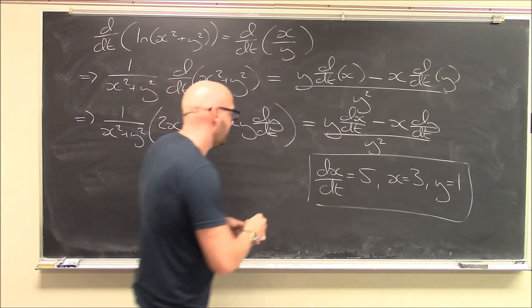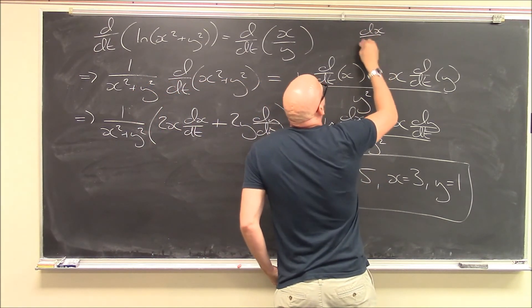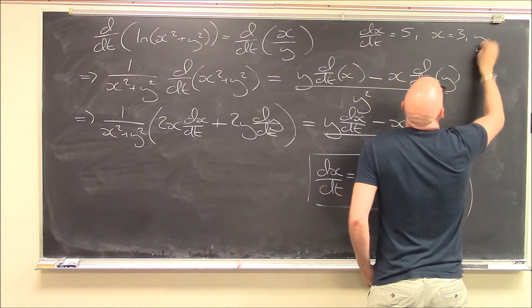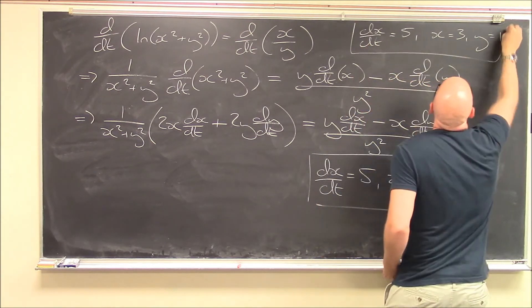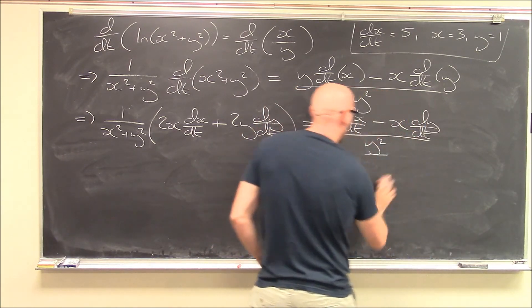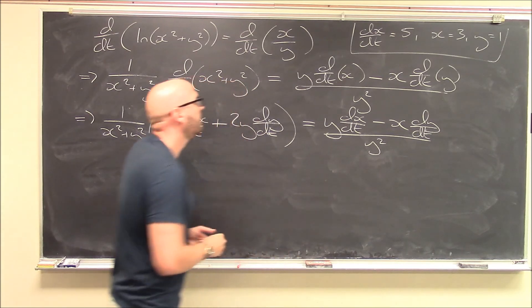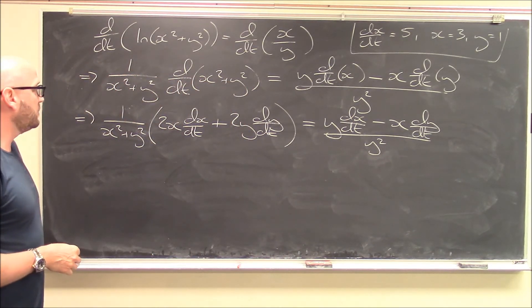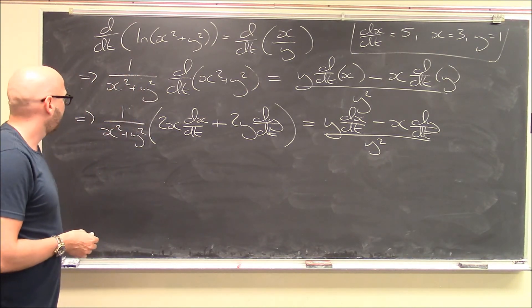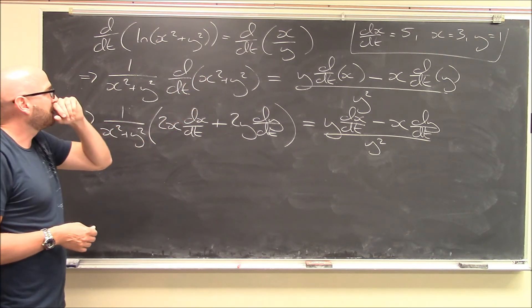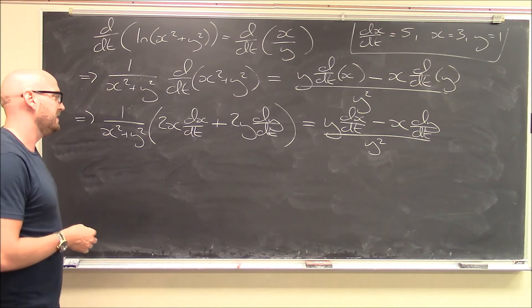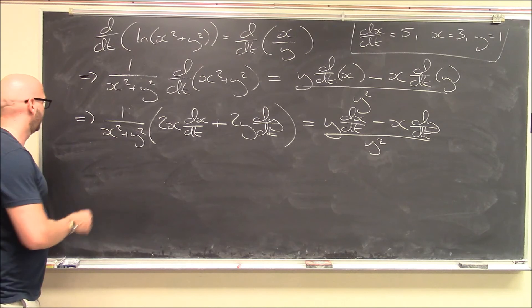Let's keep track of the given values: dx/dt is 5, x is 3, and y is 1. We want to solve for dy/dt. Since I'm given so many numerical values, let me just start plugging them in — I think this will make our life a little bit easier.